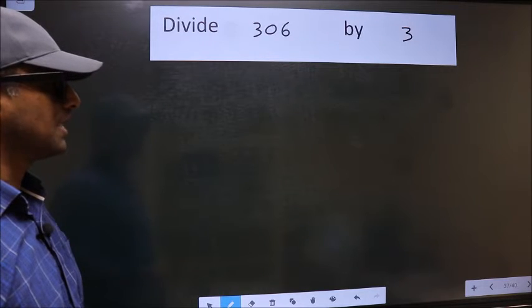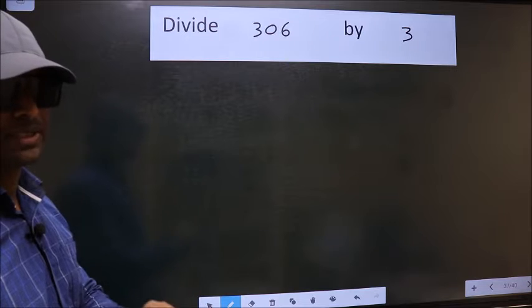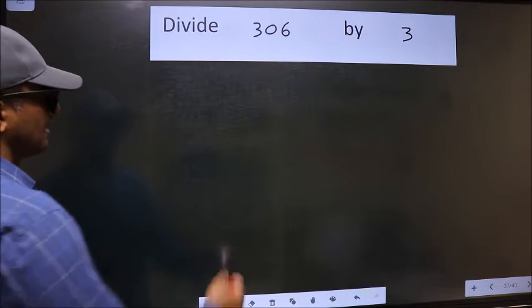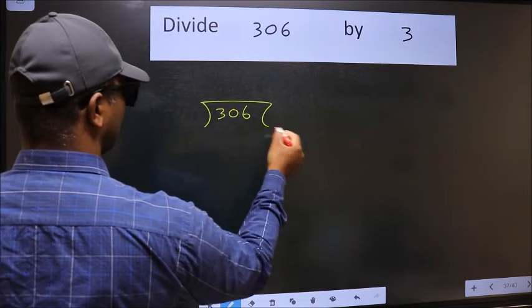Divide 306 by 3. To do this division, we should frame it in this way. 306 and 3 here.